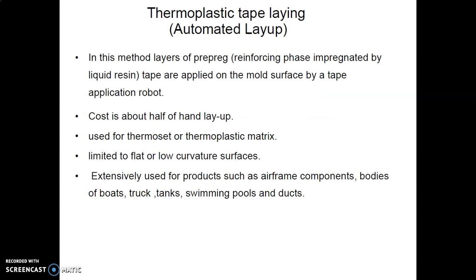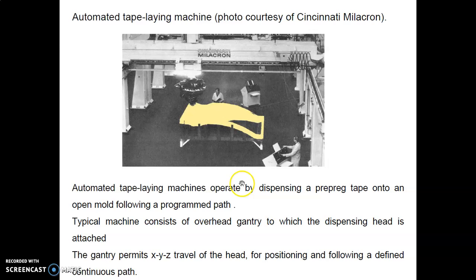Thermoplastic tape laying is a method in which layers of prepregs — reinforcing phase impregnated with liquid resin — are applied on the mold surface by a tape application robot. The cost is about half of the hand layup technique. Hand layup is the easiest process with very low cost. Thermosets and thermoplastic matrices are limited to low curvature surfaces, and only small thicknesses can be maintained. This process is extensively used for products such as airframe components, boat bodies, trucks, tanks, swimming pools, and ducts.